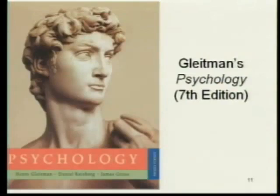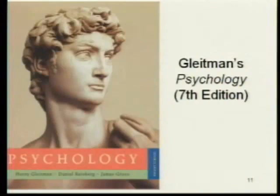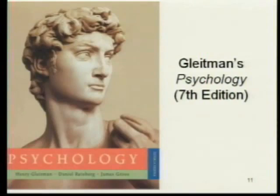The textbook for the course is Psychology by Henry Gleitman and his associates. Henry Gleitman is a longtime professor at the University of Pennsylvania — he was one of my professors in graduate school. Daniel Riesberg is a psychology professor at Reed College in Oregon, and James Gross is a psychology professor at Stanford. The version we're using is the seventh edition — it's brand new, different organization, different authors from the sixth edition. The sixth edition won't do; we want you using the seventh edition.